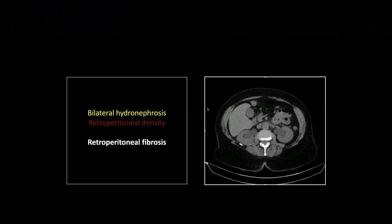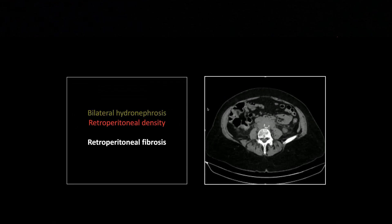Retroperitoneal fibrosis. Here you can see there's bilateral hydronephrosis. Not much to see at the higher level, but lower down you can see this ill-defined soft tissue density surrounding the aorta and clearly involving the ureters.